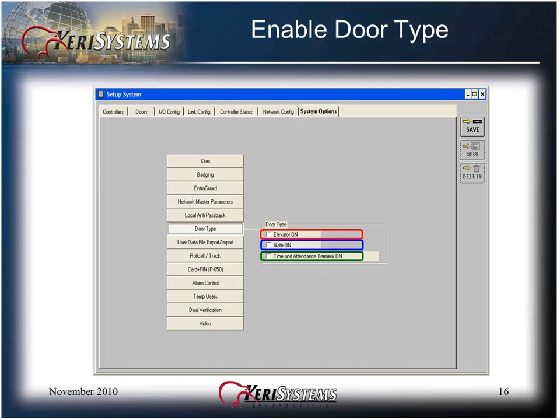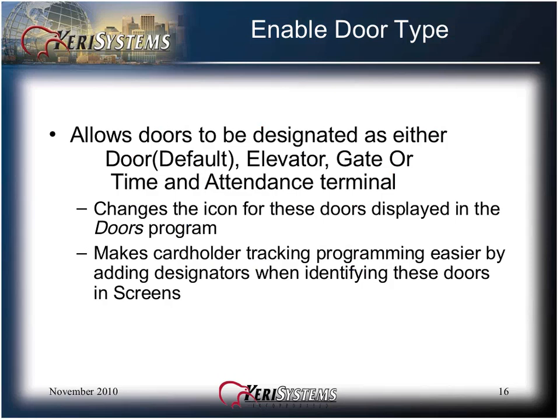For each door type, click on the checkbox to enable that specific door type for your system. All doors to be designated as either door, elevator, gate, or time and attendance terminal will change the icon for these doors displayed in the DOORS program. It makes cardholder tracking programming easier by adding designators which identify these doors in screens. Door type is used for descriptive purposes only; it does not affect door operation. The option must be turned on here, but each door type is selected later in the Setup System Doors tab.